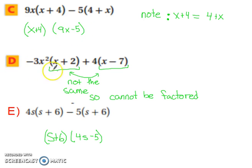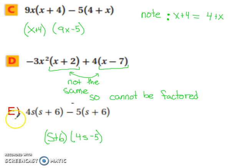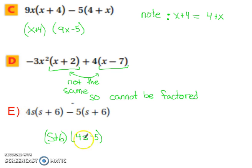In example d, notice how you have x plus 2 and x minus 7 — they aren't the same, so you cannot factor this; it can't be factored. Example e looks similar to the first one we started with: we have s plus 6 and s plus 6, so you factor that out and you're left with 4s minus 5.